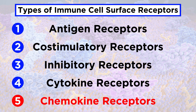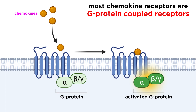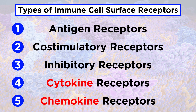And finally for number five, we have chemokine receptors. Chemokines are similar to cytokines in that they are soluble protein messengers, but their role is to help guide immune cells to the site of infection or damage. Most chemokine receptors are large G-protein coupled receptors. When a chemokine binds its receptor, it causes changes in adhesion and motility that help the cell migrate to infected tissues. Cytokines and chemokines are very important signaling molecules, so we will discuss them in much greater detail going forward.